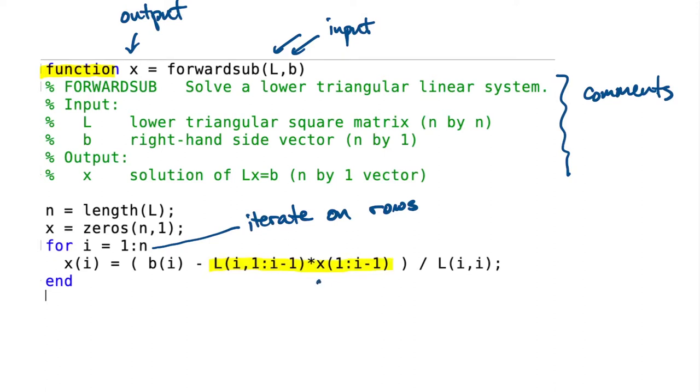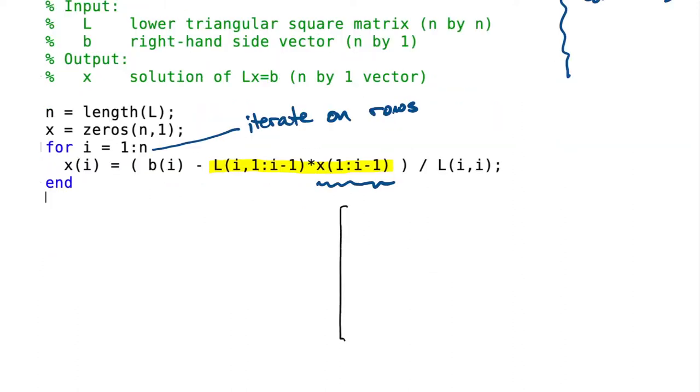So this x part here, this is a way of getting a sub-vector out of x. It's elements 1 through i-1. And since x we set up as a column vector in the second line, that means that this will also be a column vector of length i-1.